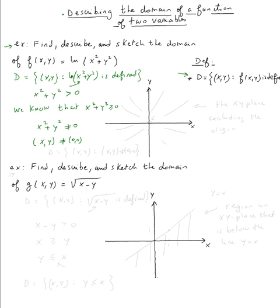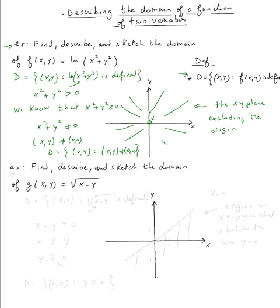So the domain will be all points (x, y) such that (x, y) is not equal to (0, 0). So we're excluding this point, and it will be the whole xy-plane except the origin. We don't want the origin — the xy-plane excluding the origin. So that describes the domain.